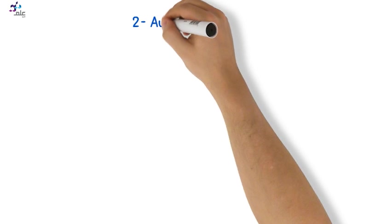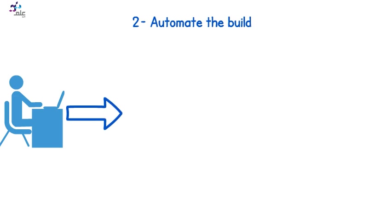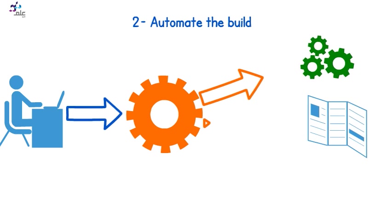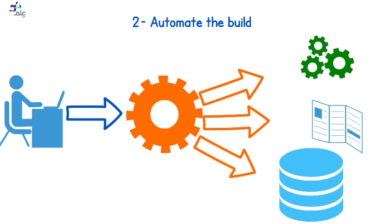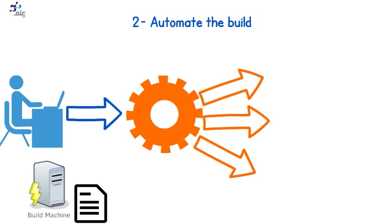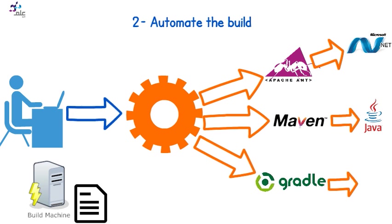2. Automate the build. Getting source code into a running system can often be a complicated process involving compilation, moving files around, loading schemas into the databases, and so on. Build scripting is widely used in Elm for various projects and technologies — like Ant for .NET, Maven for Java, and Gradle for Android.